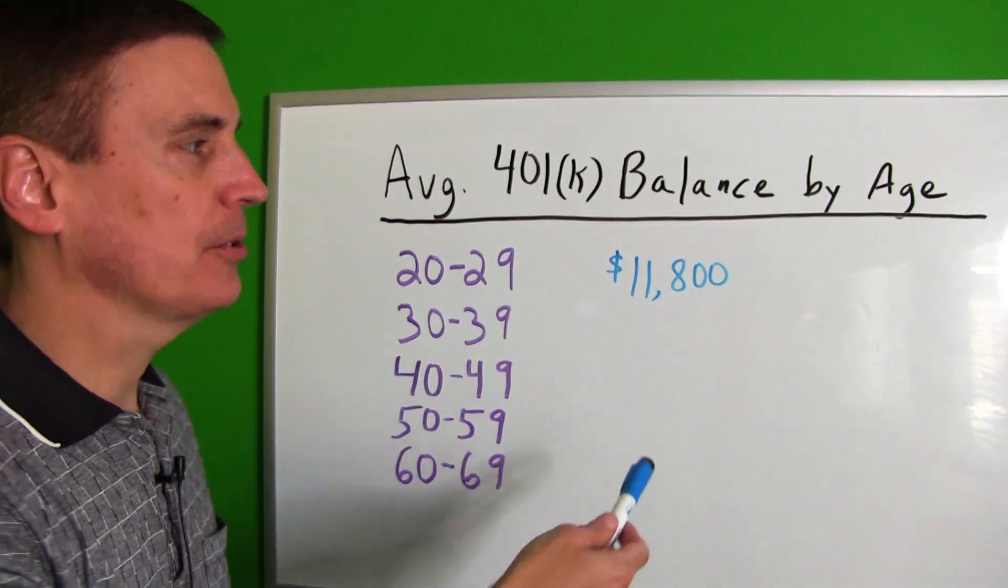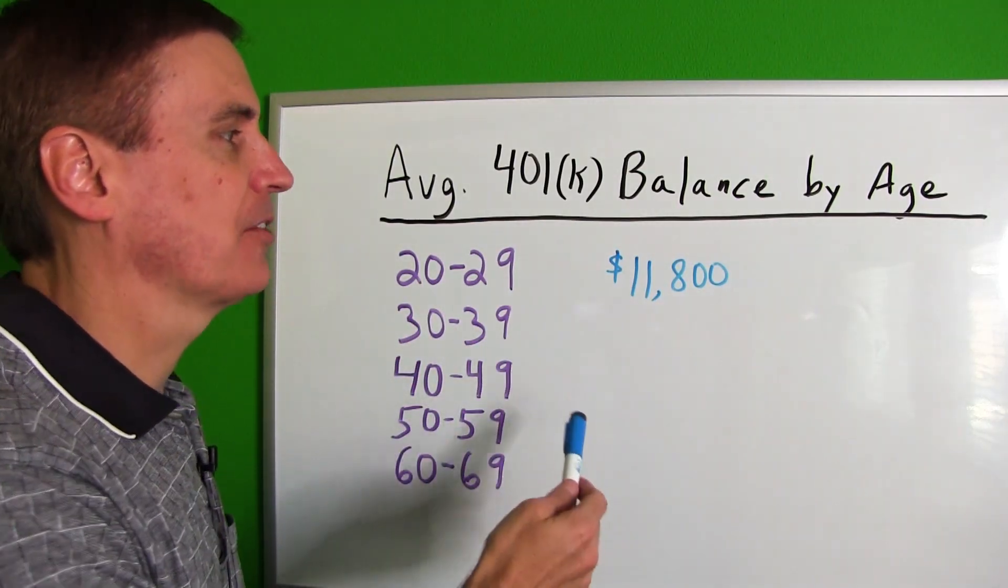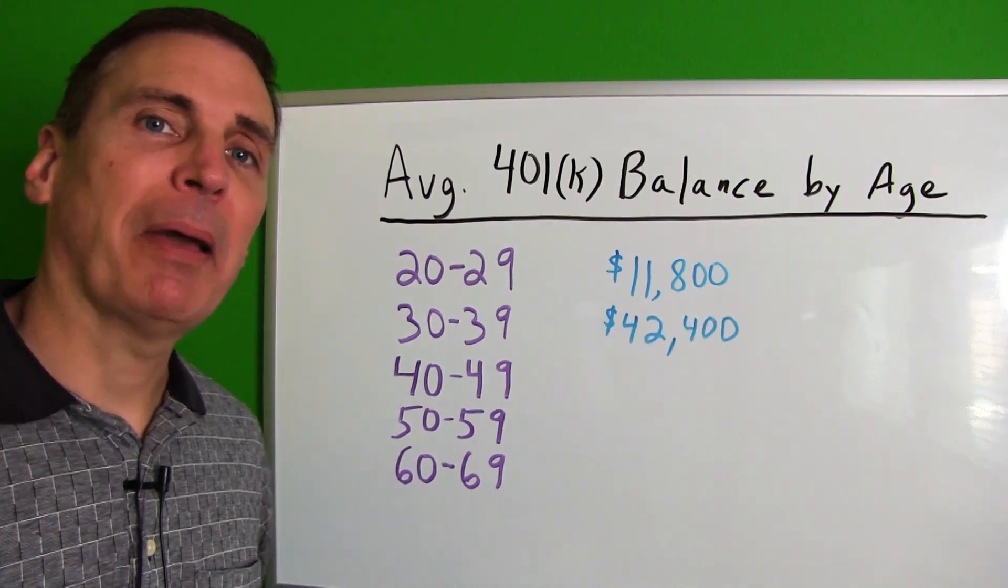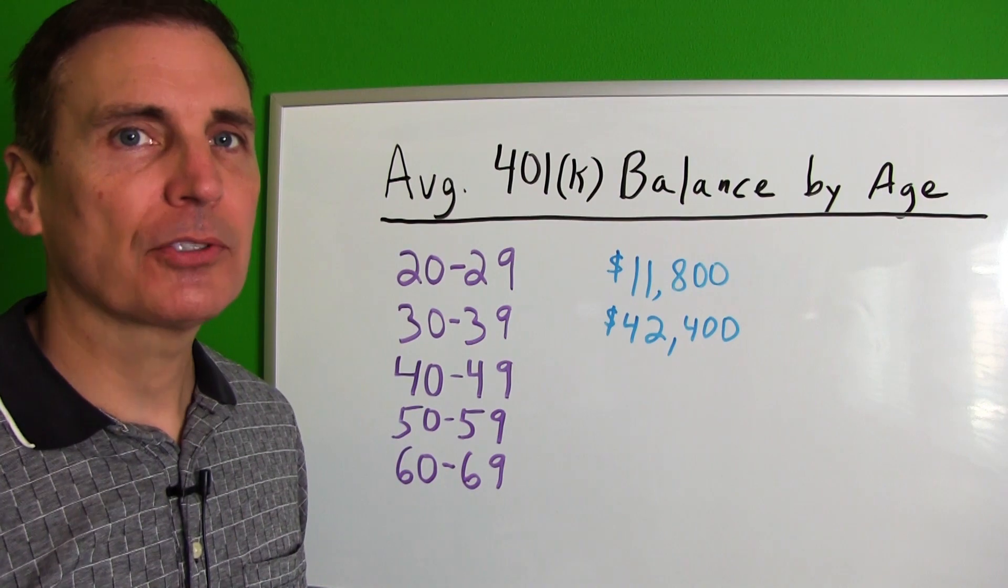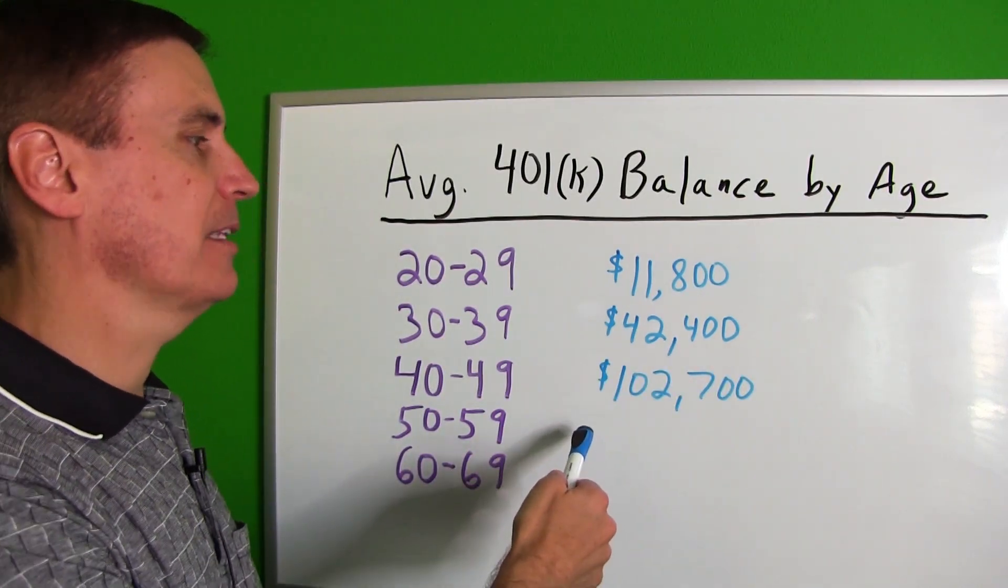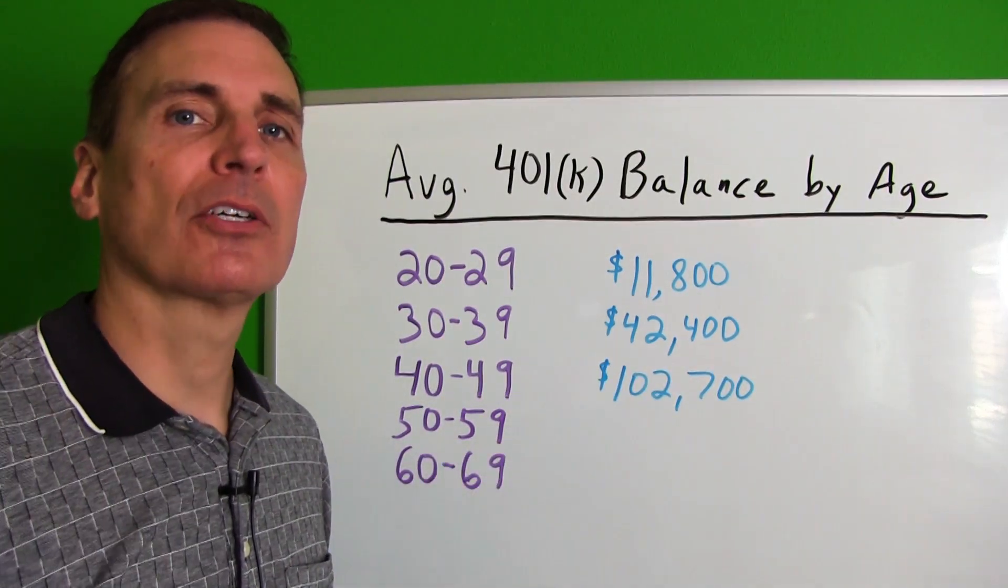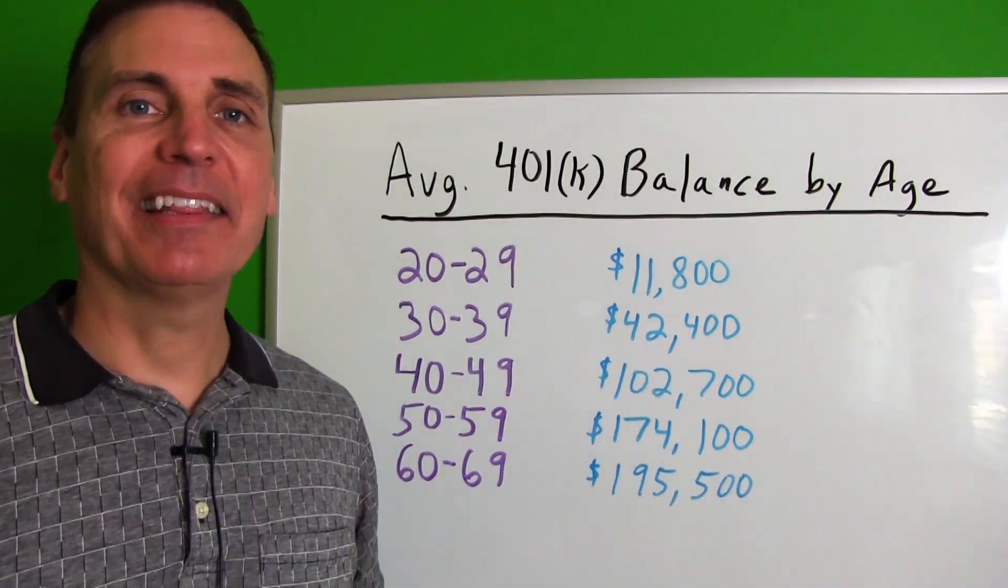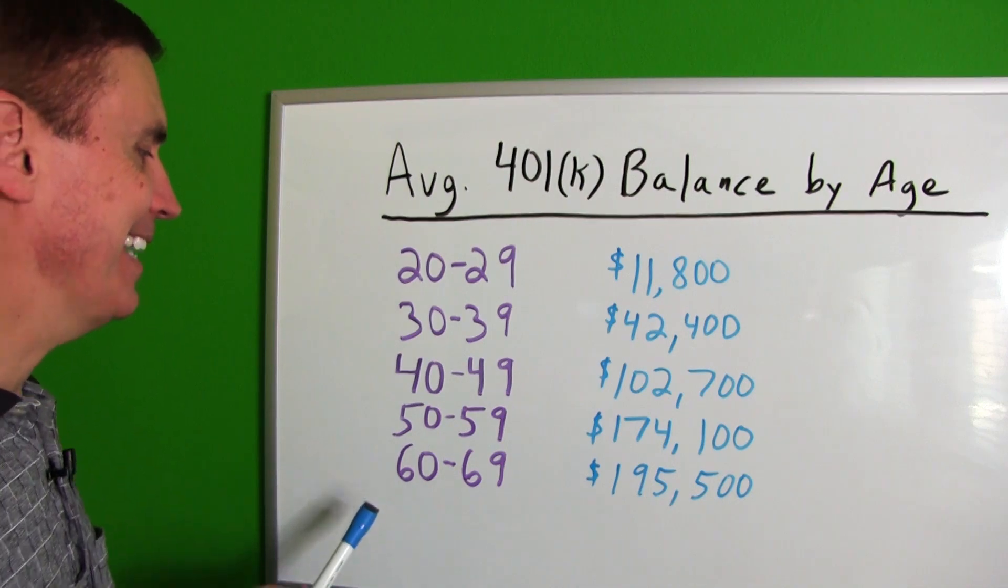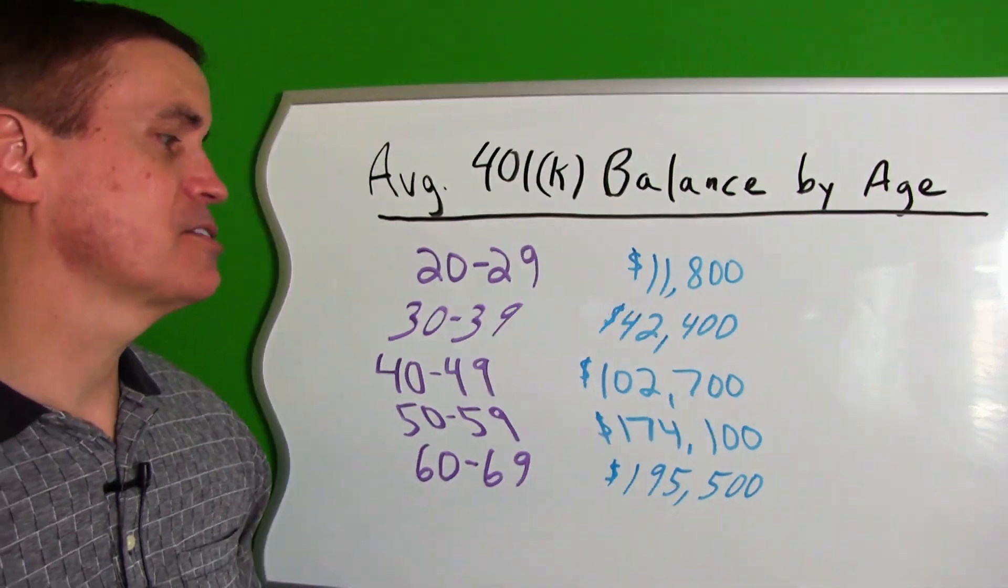Actually, the average 20 to 29 year old has a balance of $11,800. The average balance of a 30 to 39 year old is $42,400. The 40 to 49 year old has an average balance of $102,700. 50 to 59 year olds have a balance of $174,100. And last but certainly not least, the 60 to 69 year olds have an average balance of $195,500.